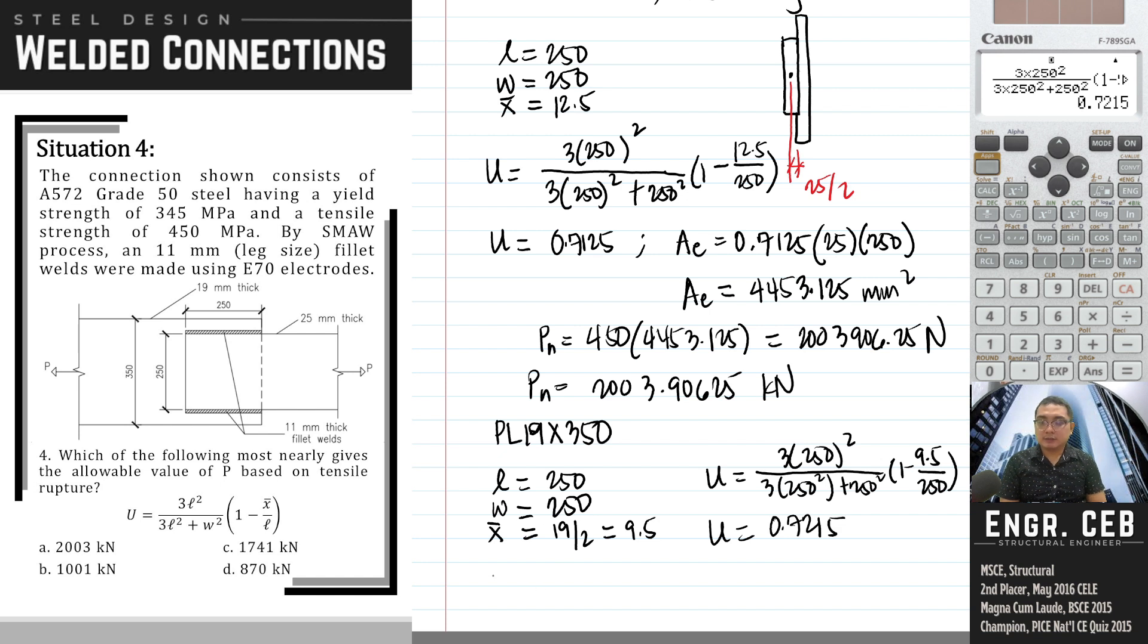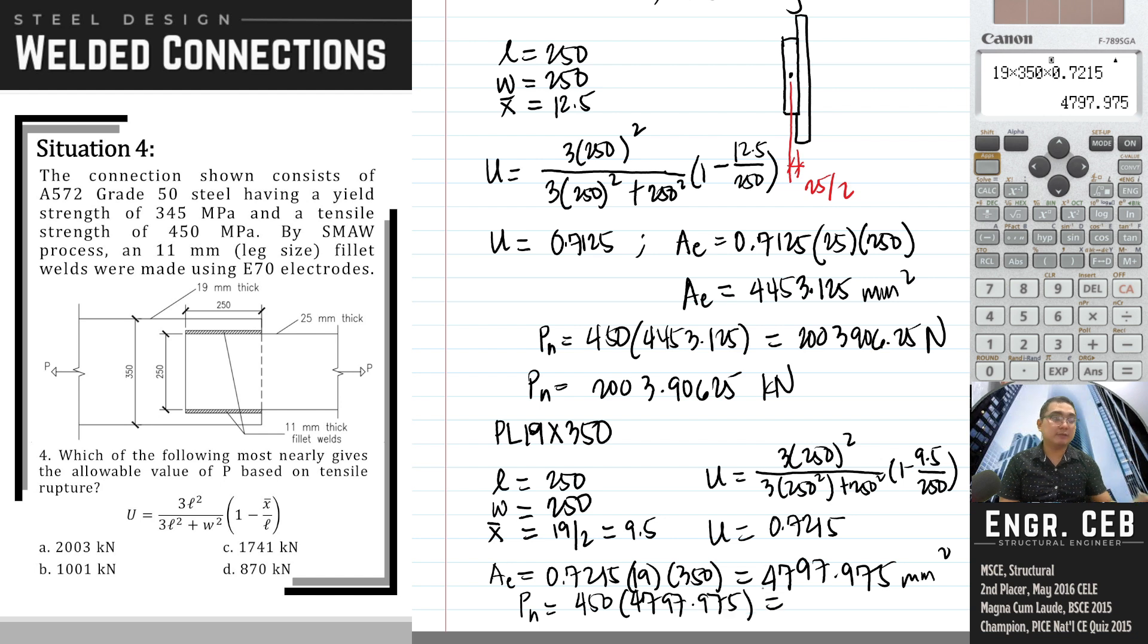We can now compute AE. That is 0.7215 times the gross area, 19 by 350, which equals 4797.975 mm². Therefore, Pn equals 450 times 4797.975, giving 2159088.75 N, or 2159.09 kN.